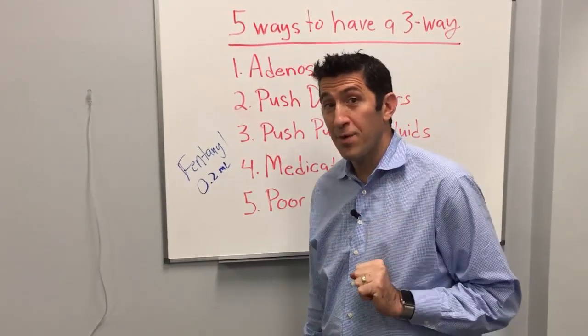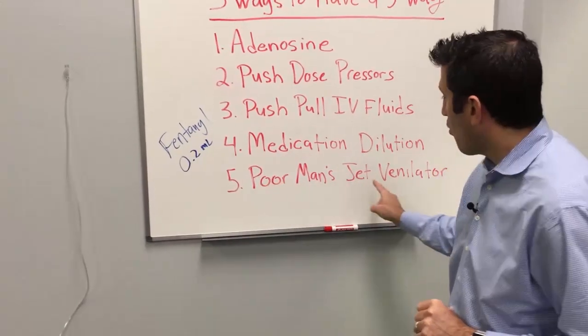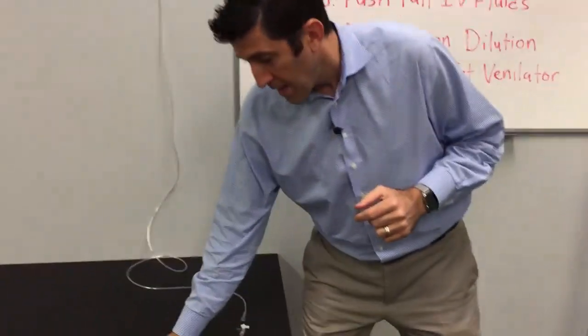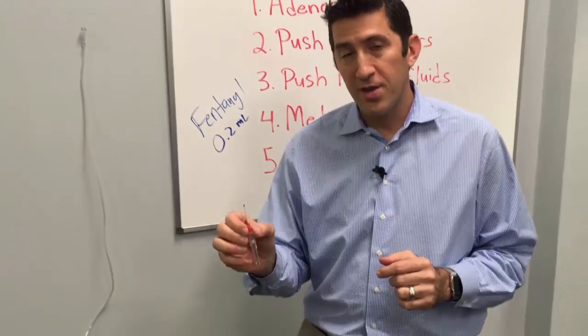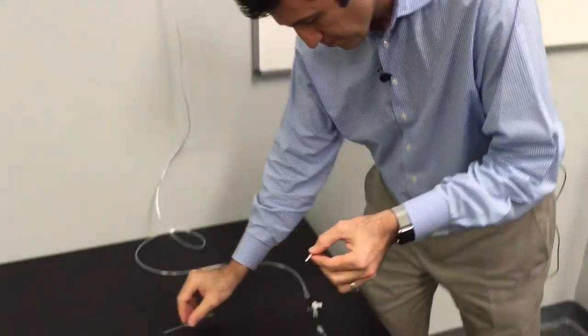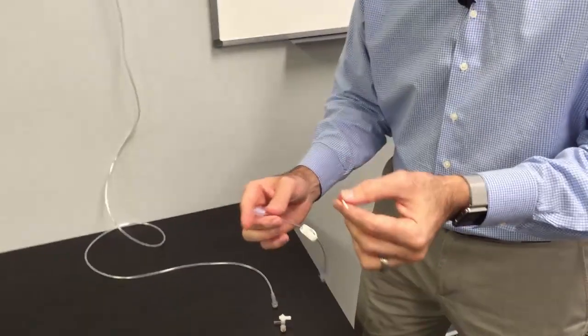And the fifth way to have a three-way is during the poor man's jet ventilator. So essentially, if you have a needle crike, pediatric patient, you cannot oxygenate, you cannot ventilate, hopefully you'll never have to get to this point. But once you go through the trachea, you then need a few things.